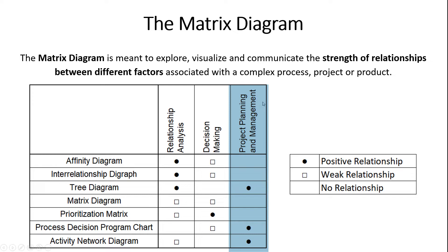The third category is project planning and management. You can do all the root cause analysis you want, but implementing a corrective action is often its own complex project. The tree diagram is a great way to understand all the hierarchical relationships between different tasks. The process decision program chart is great for risk management in project management. And the activity network diagram is a fantastic tool for understanding how long a project will take and what the critical path is.